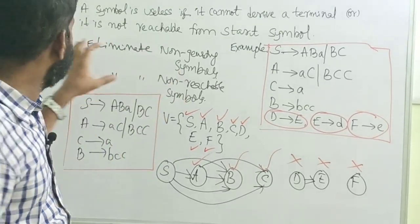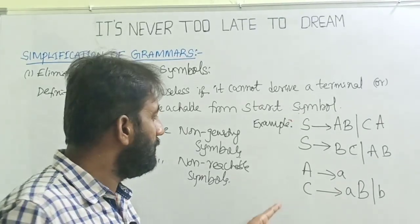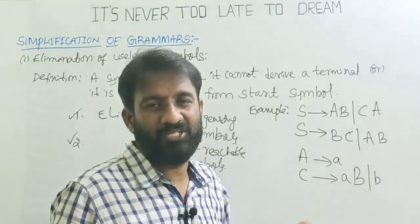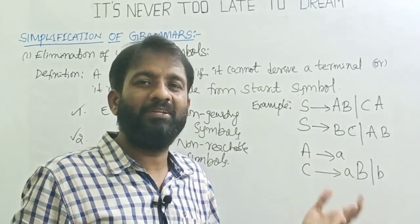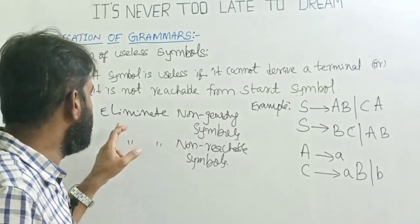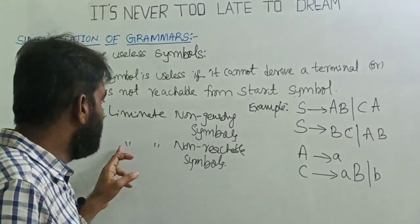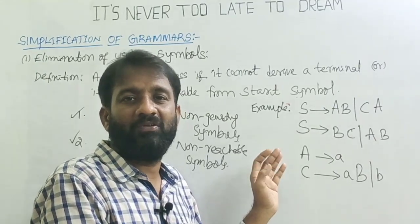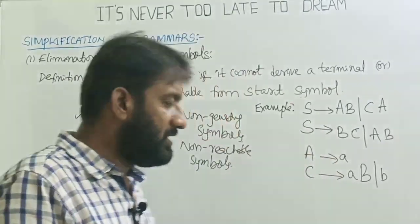We have reduced the grammar after eliminating useless variables. Let's try another example. The grammar is: S → ab | cA, S → bc | aba, A → a, C → a | B. Now I'm asking you to reduce the grammar by eliminating useless variables. First, eliminate non-generating symbols — variables not generating any terminals. Second, eliminate non-reachable symbols.